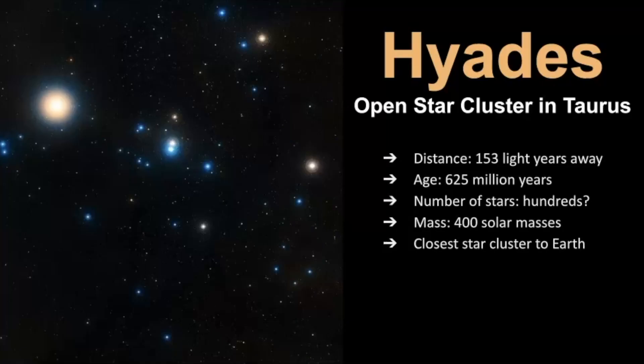So when we look at the Hyades, this again is classified as an open star cluster and its distance is different. It's closer. It's 153 light years away and its age is older as well than the Pleiades. It's estimated to be 625 million years. So that's why we see that variety of color there. These stars are older.